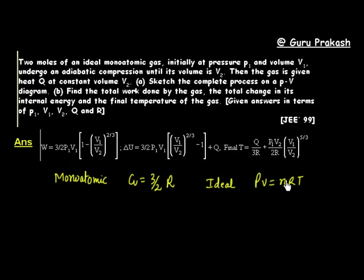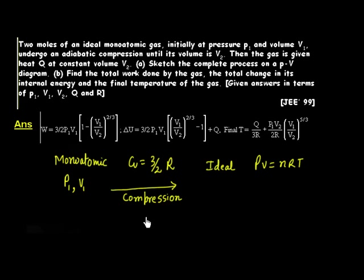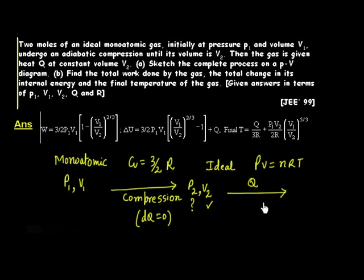Initially the system is at pressure P1 and volume V1. It is adiabatically compressed — this is a compression process and adiabatic means DQ = 0. Finally, pressure is P2 and volume is V2 (volume is given; pressure must be calculated). Then the gas is given heat Q at constant volume V2, so volume remains constant during this second process.